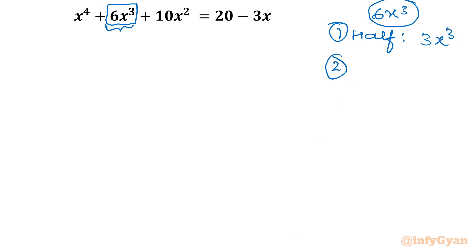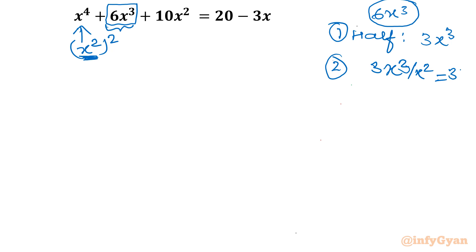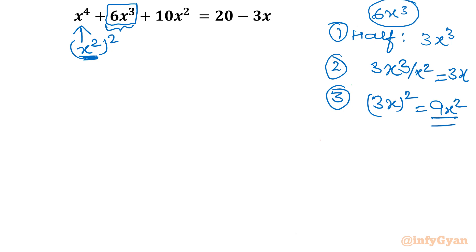Step number 2: divide by the number whose square is the leading term. So which number's square is there? It is x² whole square, so the number is x². Divide 3x³ by x², and that gives us 3x. Now we need to consider the square of this number, so there must be 9x² in the equation.